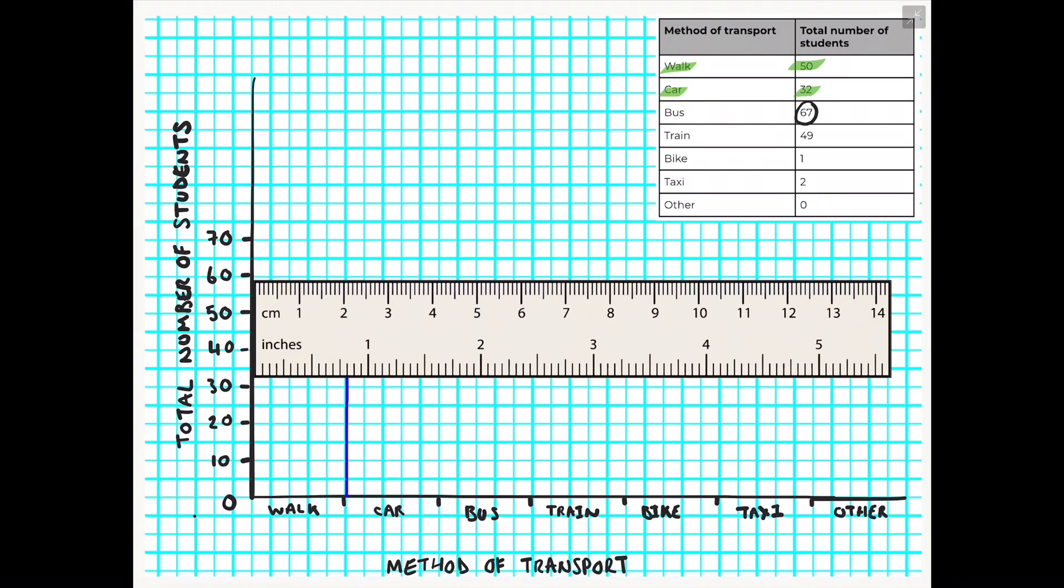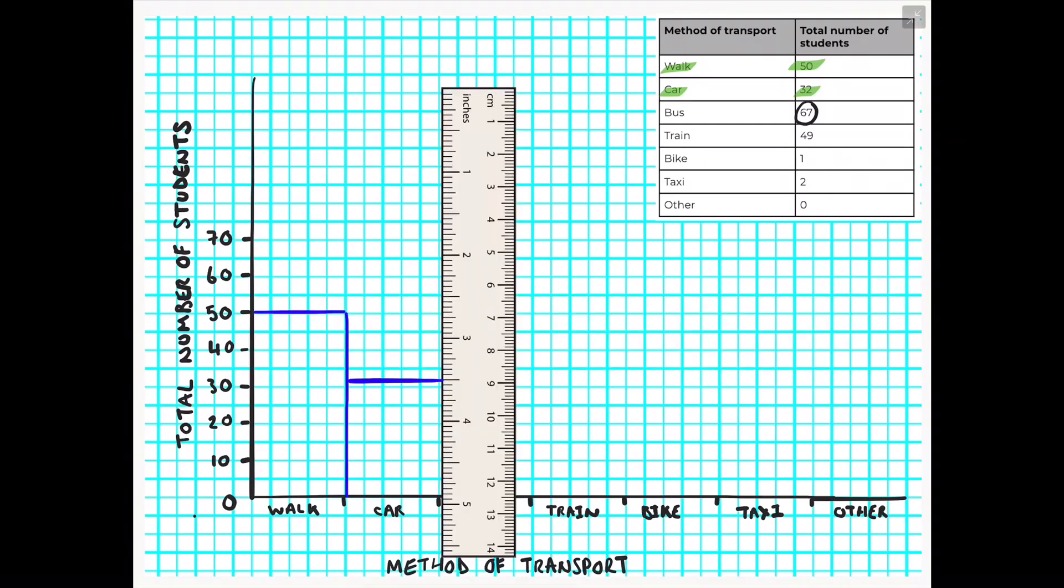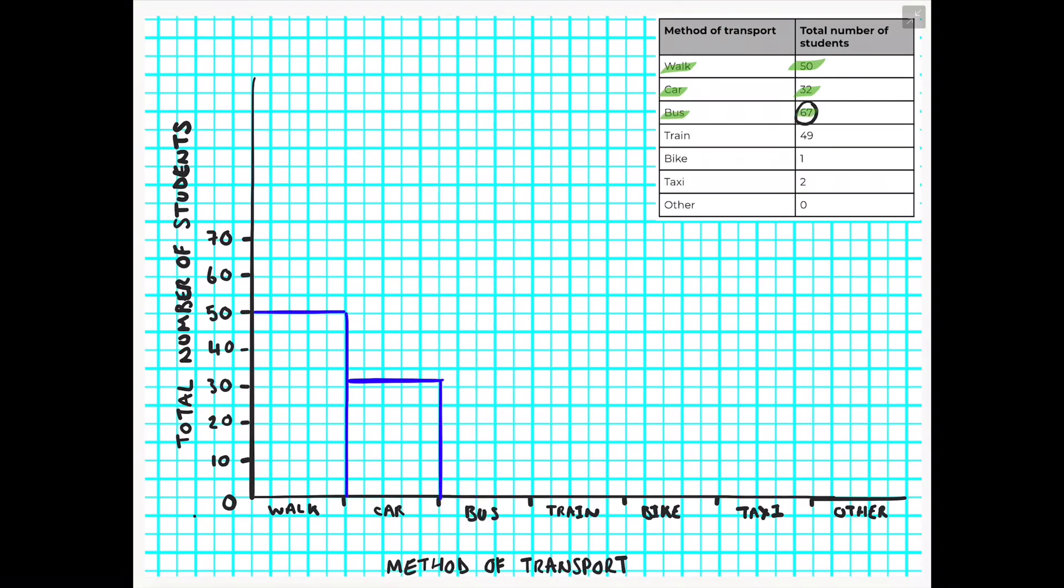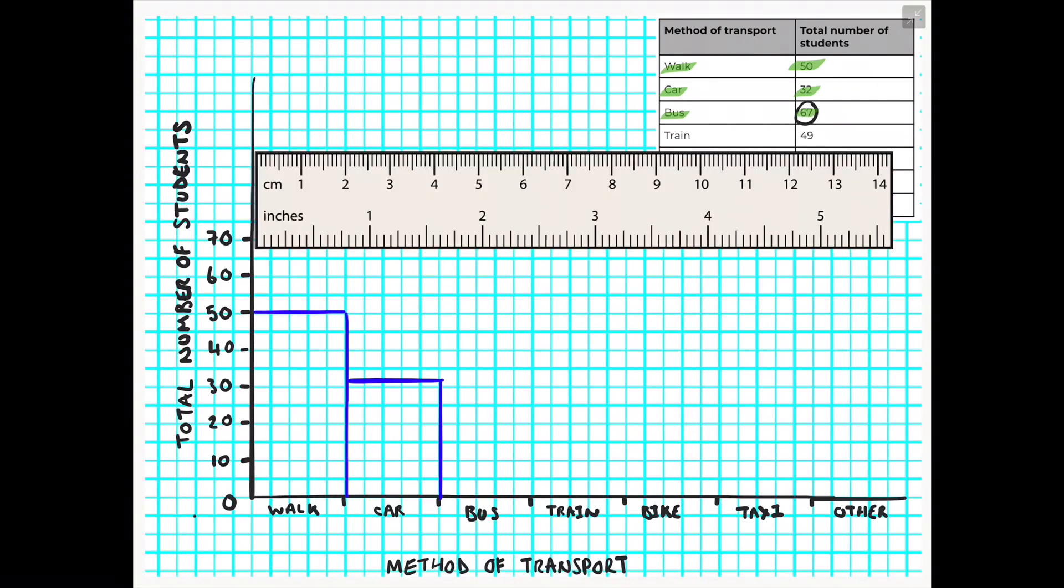We'll then continue this process by showing the bar chart for car, being indicated with 32 students. Again using that ruler in line with your y-axis and then tilting it on its side so you get a nice straight line in between your different categories.